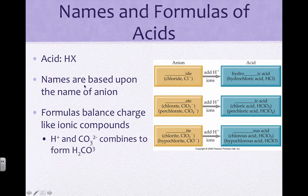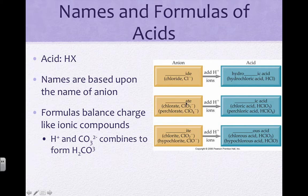Naming acids: acids are special in that they have hydrogen as the cation. We'll spend several chapters on acids since they have both ionic and molecular properties. When naming acids, the name is based on the anion. If the anion ends in '-ide,' add 'hydro-' and '-ic.' If the anion ends in '-ate,' add '-ic' only. If the anion ends in '-ite,' add '-ous.' When writing the formula, add H+ to the anion to achieve a net charge of zero.